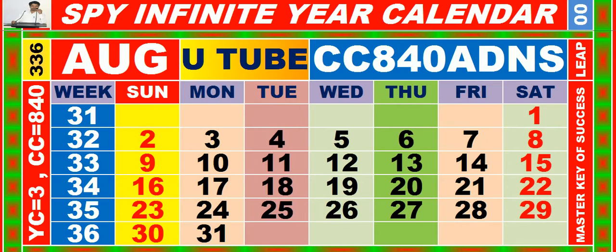Calendar for the month of August, having calendar code equal to 840.